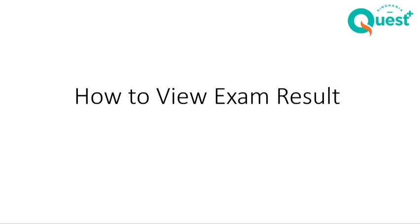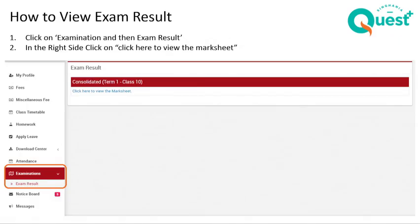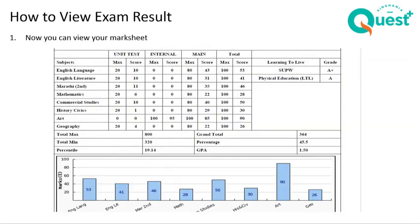How to view your exam result — this can be viewed by both parents and students. To view your exam result, click on the examinations link on your left-hand side menu. Below that you will see exam result. Once you click on that, your page will have a link which says click here to view the mark sheet. Since we are in the process of rolling out your term one exams, this is where you need to go to download your report cards. Parents and students both can do this. You can download it and keep it on your desktop or laptop for future reference.